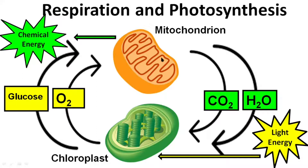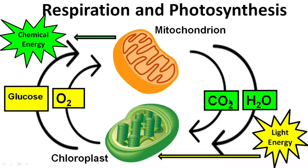The products of respiration act as reactants for photosynthesis, and the products of photosynthesis act as reactants for respiration. So both of them happen in an interdependent way in a plant cell, especially during the daytime. But whenever the rate of respiration is higher, the requirement of oxygen is more, so in those cases they are dependent on the external atmosphere. Air that enters through the stomata provides that extra oxygen. In the same way, carbon dioxide produced in excess from respiration is released into the atmosphere through those stomata.